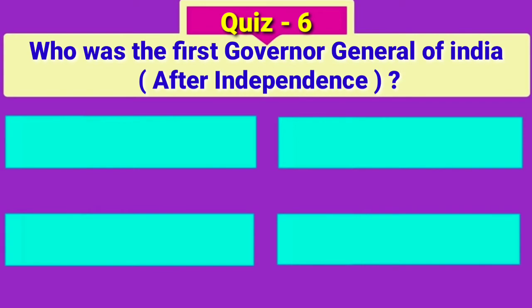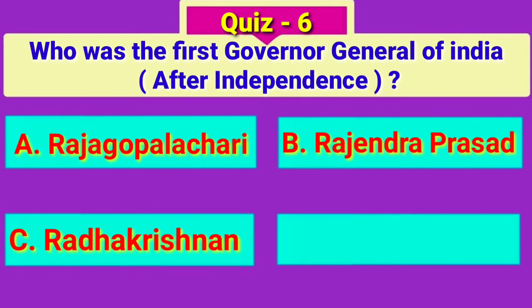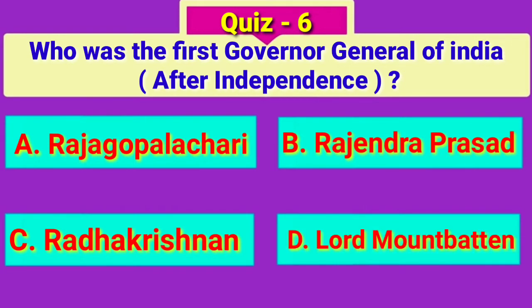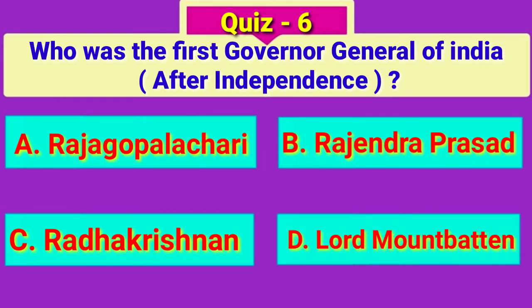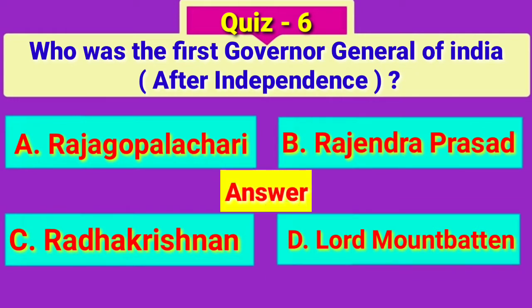Question number 6. Who was the first governor general of India after independence? Answer: Lord Mountbatten.